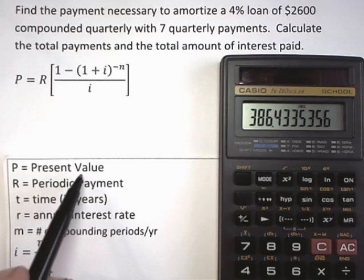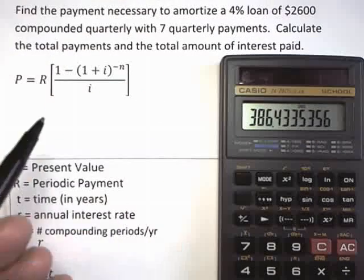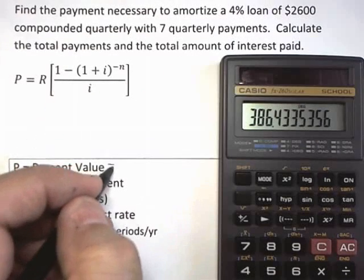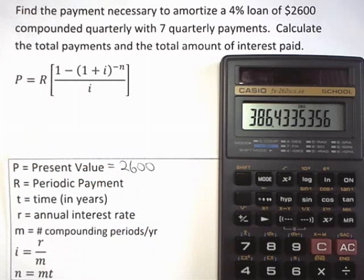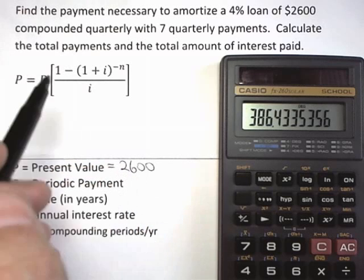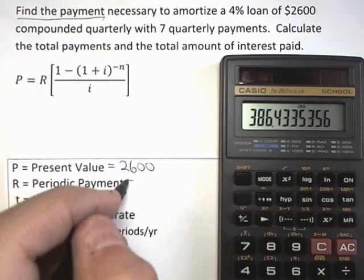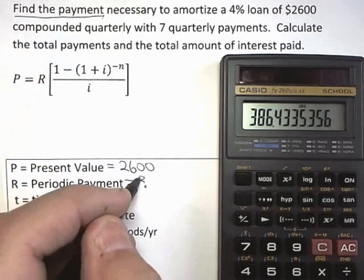The present value is the amount of the loan. Whenever you're doing loan problems, the present value is always the loan amount. That's $2,600. The periodic payment is what we're looking for. Find the payment. So we're going to be looking for capital R.